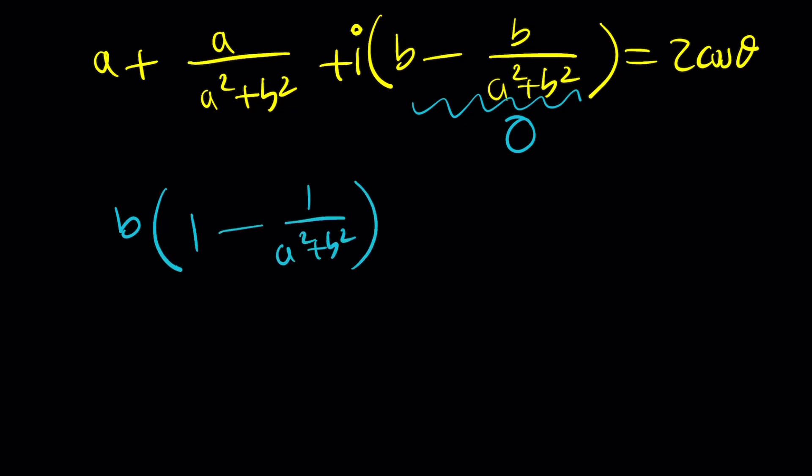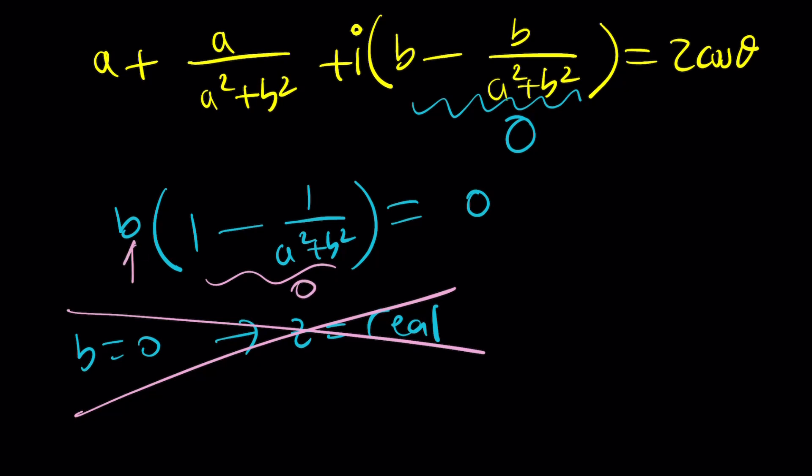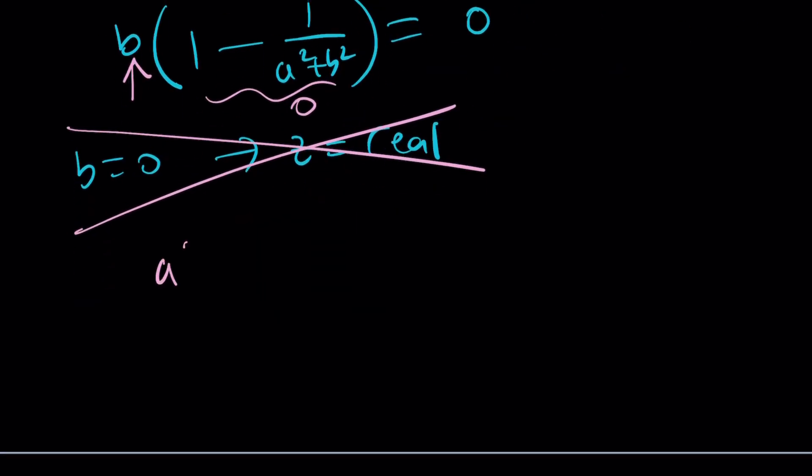I can actually factor out a b here. If b is zero, then z will be real. But we know it's impossible. We already talked about it. That was a lengthy discussion. So this must be zero then, since this is non-zero. And that means a squared plus b squared is equal to one, which means the modulus of my complex number, remember z was equal to a plus bi, the modulus is supposed to be one.